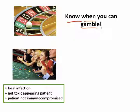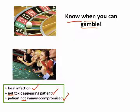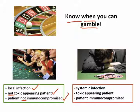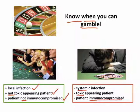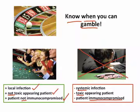Gambling time is when you can think about all your rational antibiotic choices — what bacteria you need to cover and what the best antibiotic is for that situation. This applies when you have a local infection, a non-toxic-appearing patient, and the patient is not immunocompromised. Then you have time to think, and you can pick antibiotics that are more narrow and not as broad as vancomycin and Zosyn. There's another situation — a patient with a systemic infection who is toxic-appearing or immunocompromised — where you do not want to gamble. You want to start broad and go with vancomycin and Zosyn to prevent the patient from doing poorly.